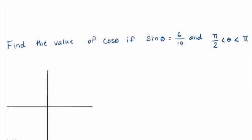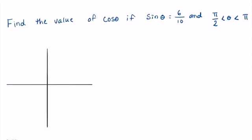So with all of those things in mind, let's go ahead and jump into our first problem. I want to find the value of cosine θ if sine of θ equals 6 over 10, and θ is greater than π/2 but less than π.